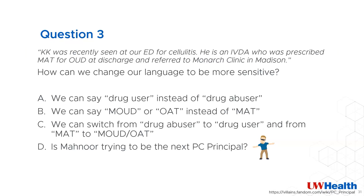We have some C's in the chat. The correct answer is C. Instead of saying 'drug abuser,' we can say 'drug user.' Instead of saying 'MAT,' we can say 'medication for opioid use disorder' or 'agonist therapy.'